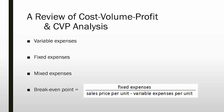Fixed expenses are those expenses that stay the same and must be paid regardless of the volume of production, such as a mortgage payment. Mixed expenses are those that are part variable and part fixed, such as a salesperson's pay being based on a fixed salary plus a variable bonus opportunity.